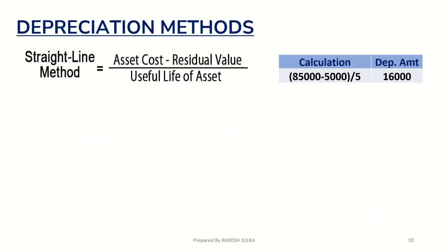Starting with the straight line method: asset value $85,000 minus residual value $5,000 divided by 5 years equals $16,000. This $16,000 depreciation amount will be applicable every year as an expense, and we place it on the debit side of the profit and loss account.